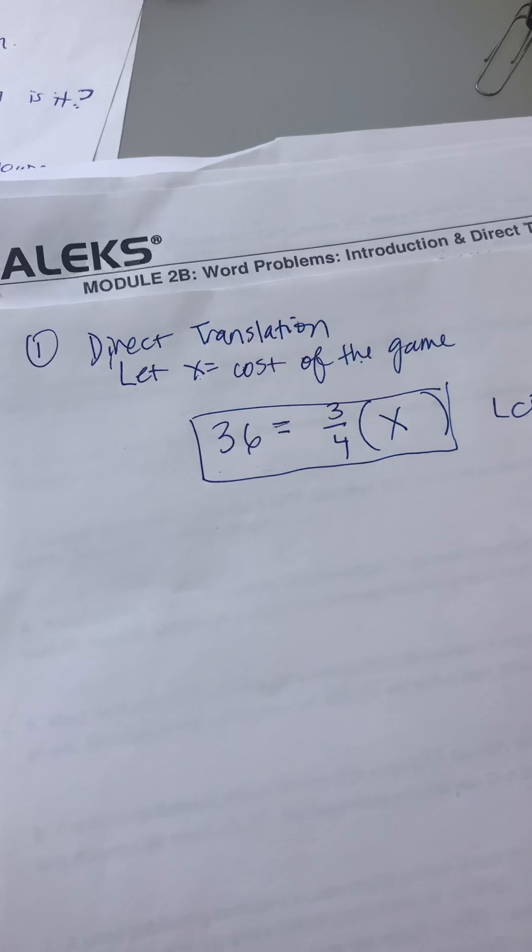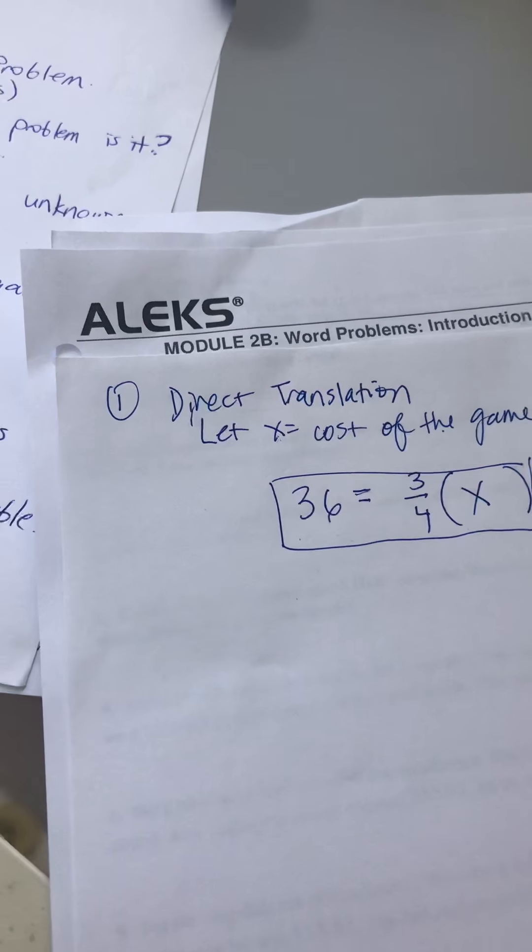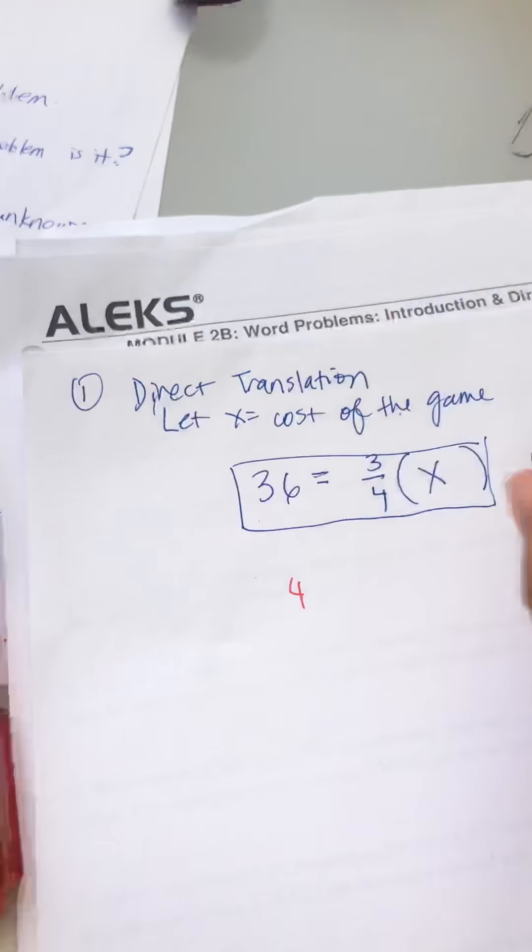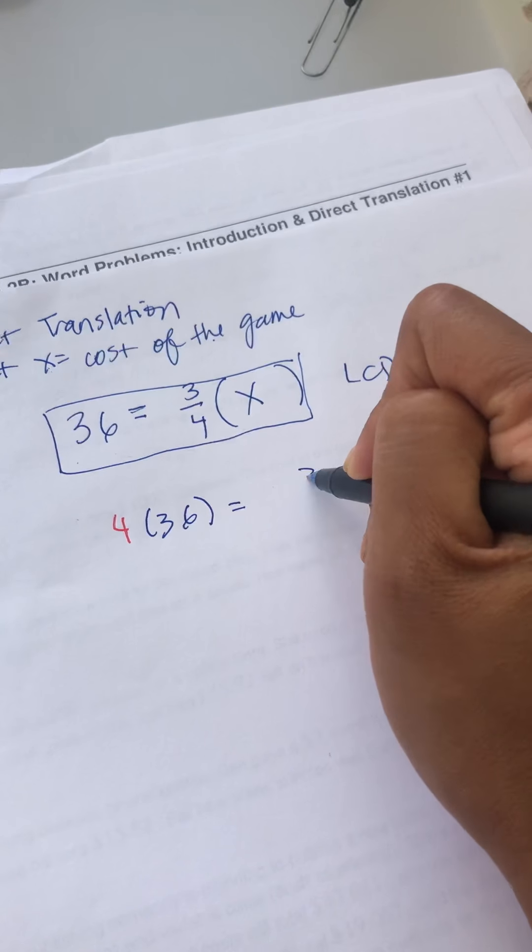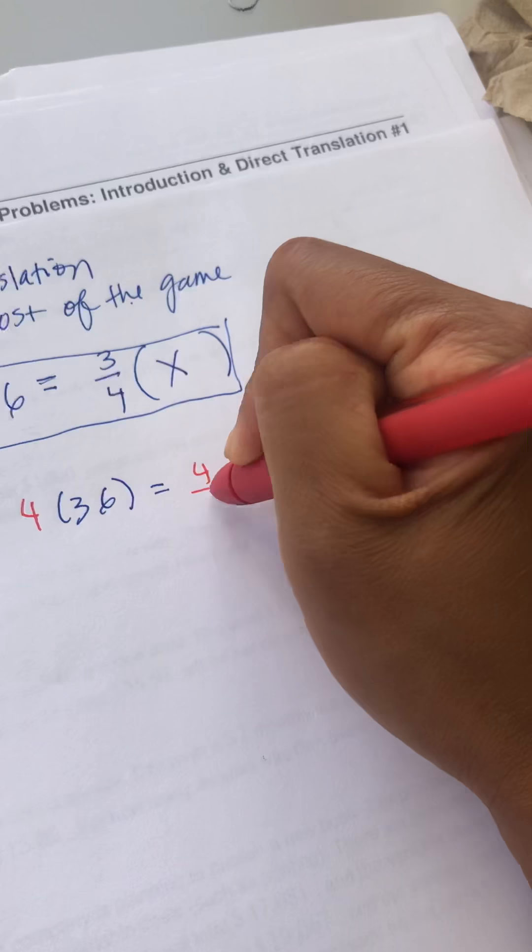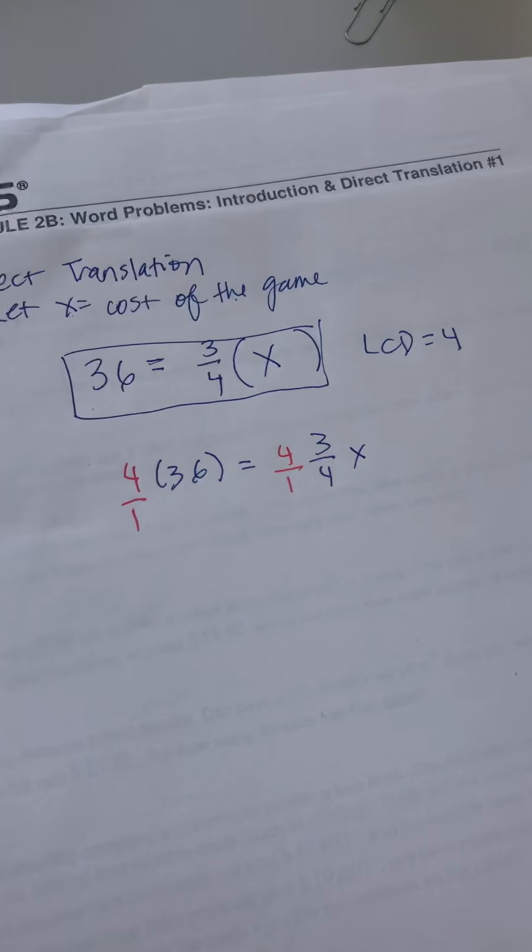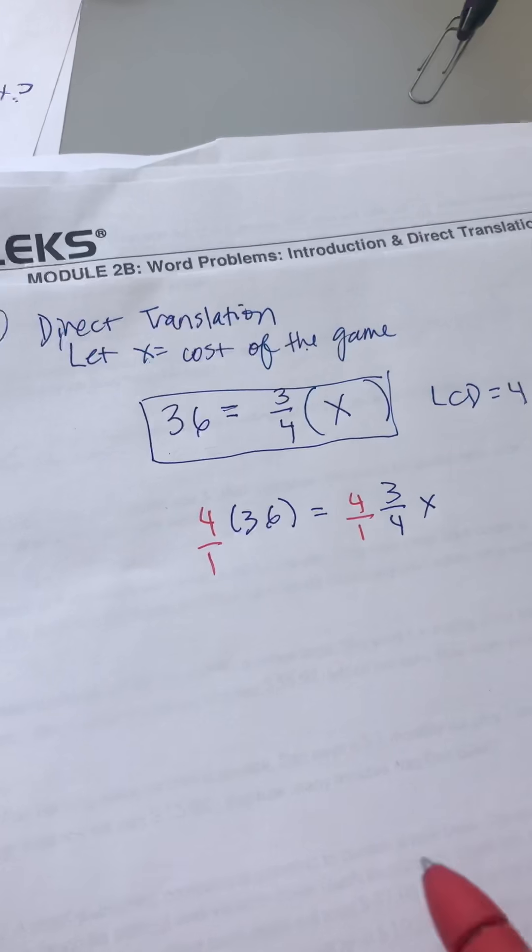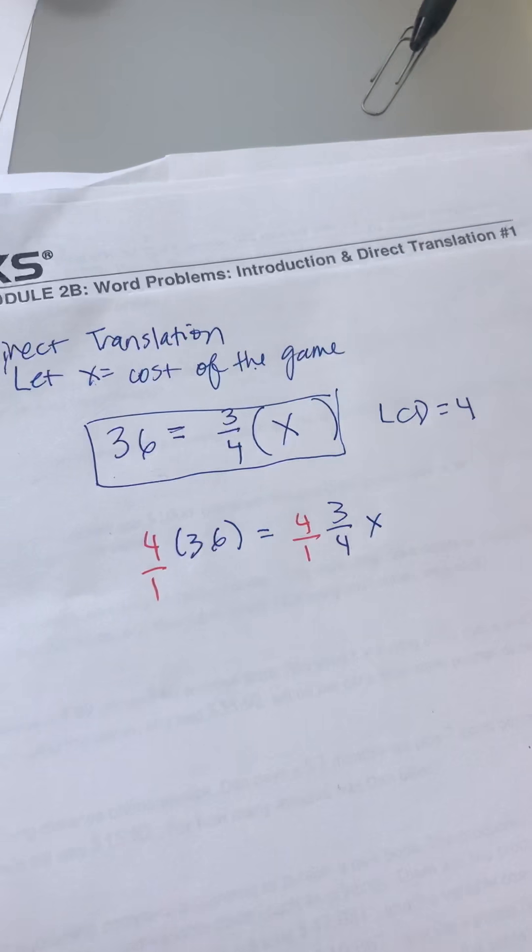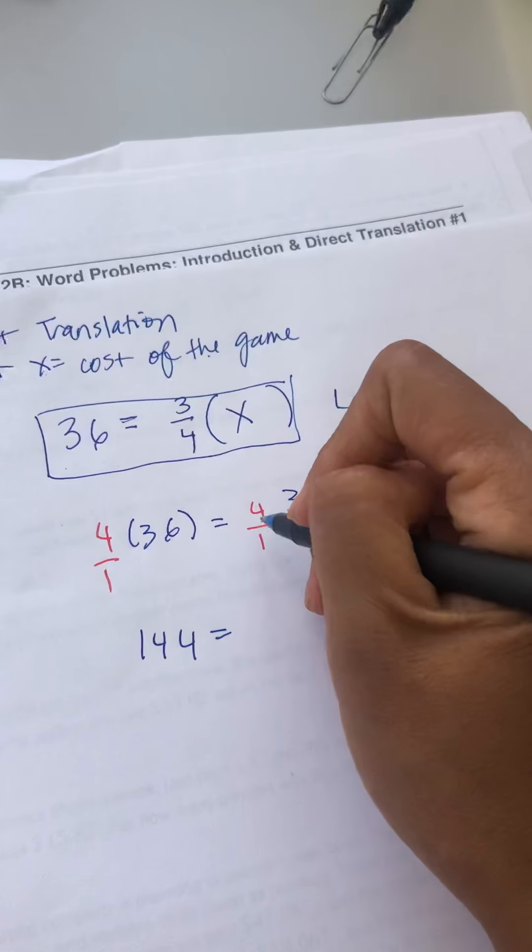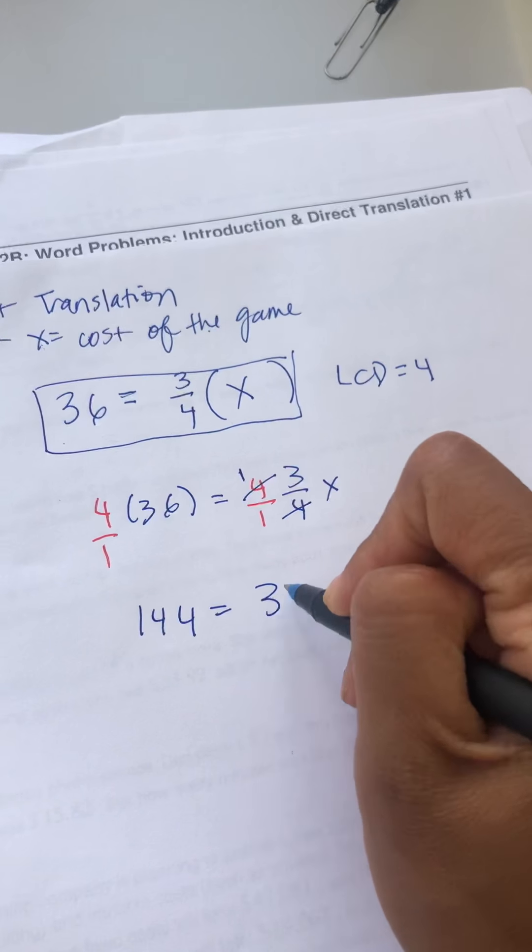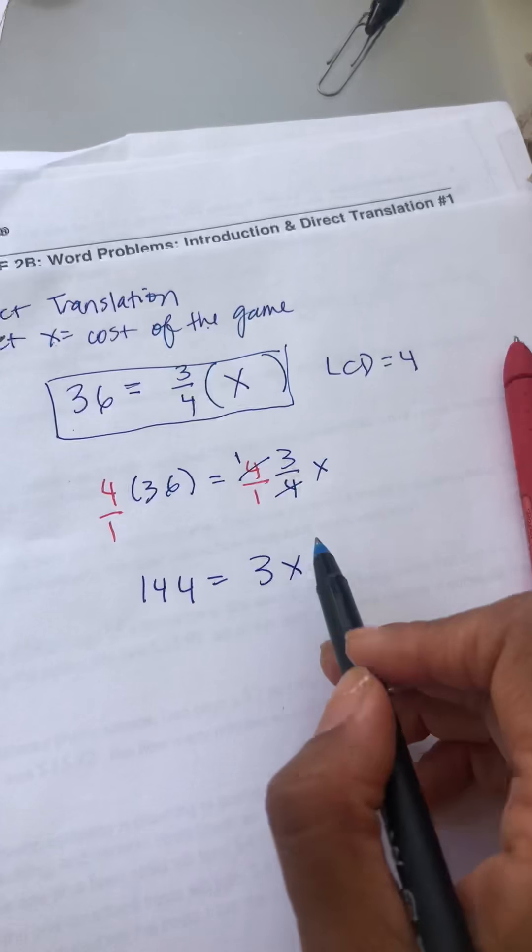So I'm going to zoom through this pretty quickly because this part hopefully is more review since you guys know how to solve equations at this point. I have three-fourths x and I'm going to multiply by four over one, right? So by doing so, thirty-six times four should give me 144. The four and the four here cancel to become a one, so here you have 3x.